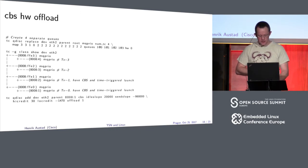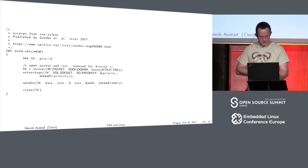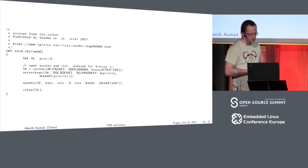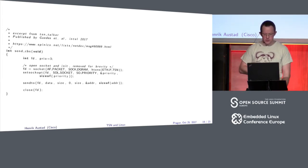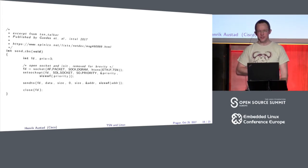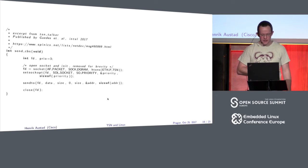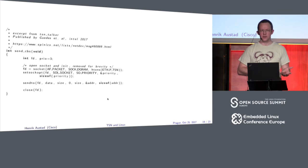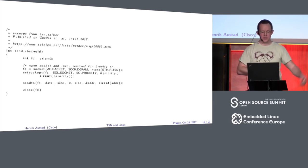To use the CBS qdisk from an application, you create a socket the standard way, set the socket option SO_PRIORITY — which is already present in the kernel — give it a priority of, say, three, and then all the frames you send to this socket will be fed to the CBS scheduler and paced out onto the network.